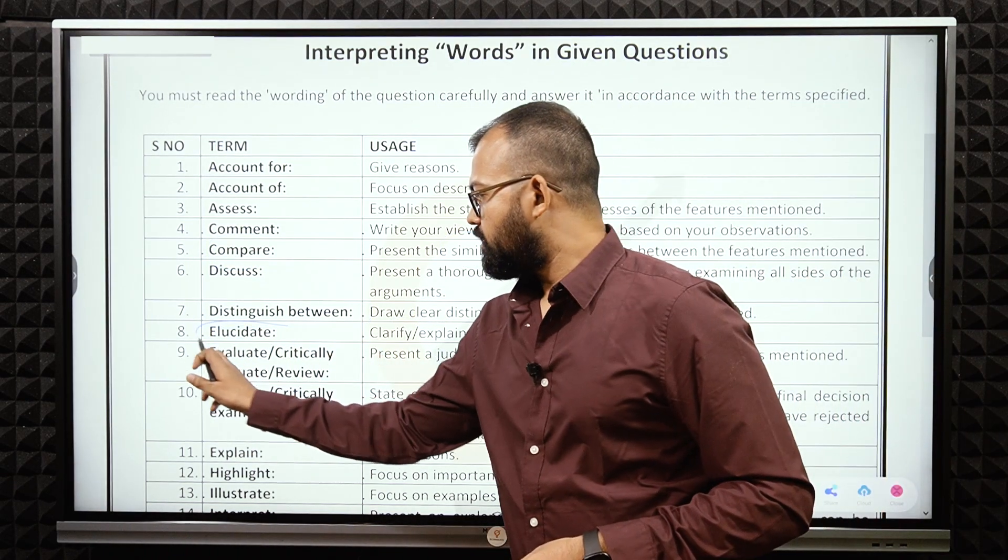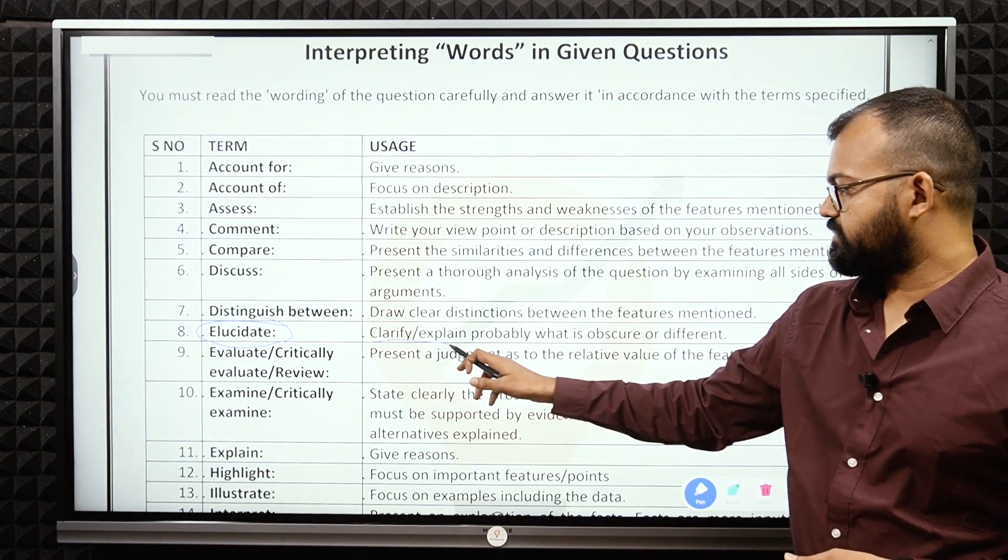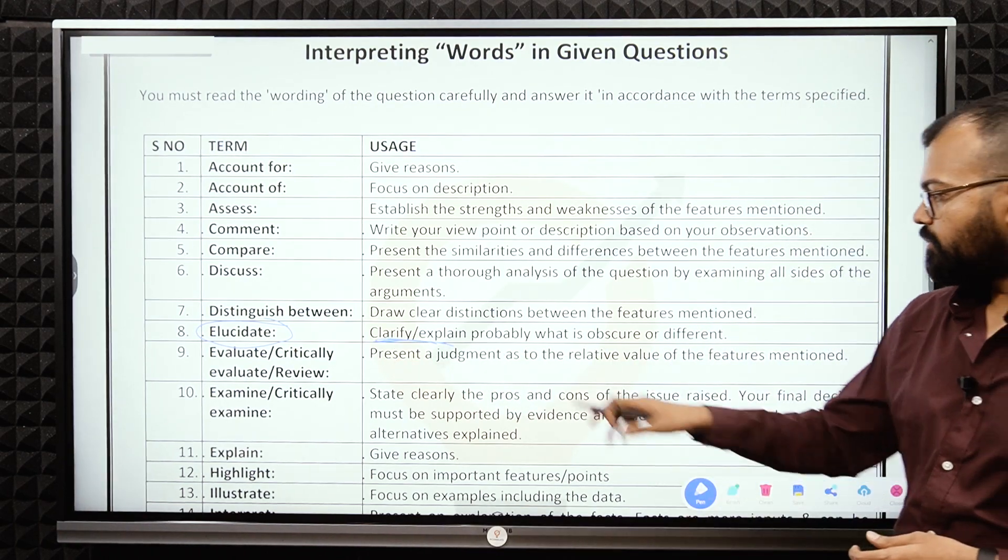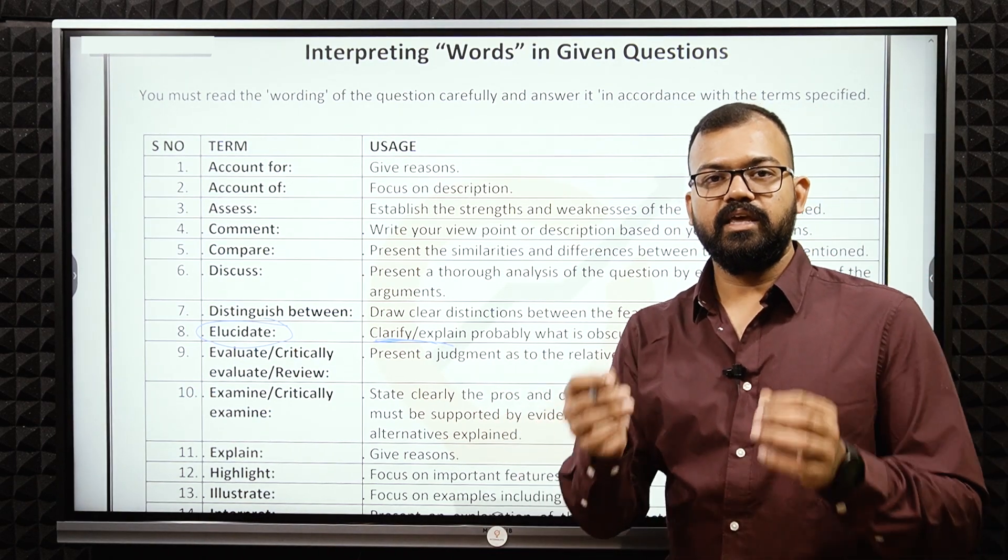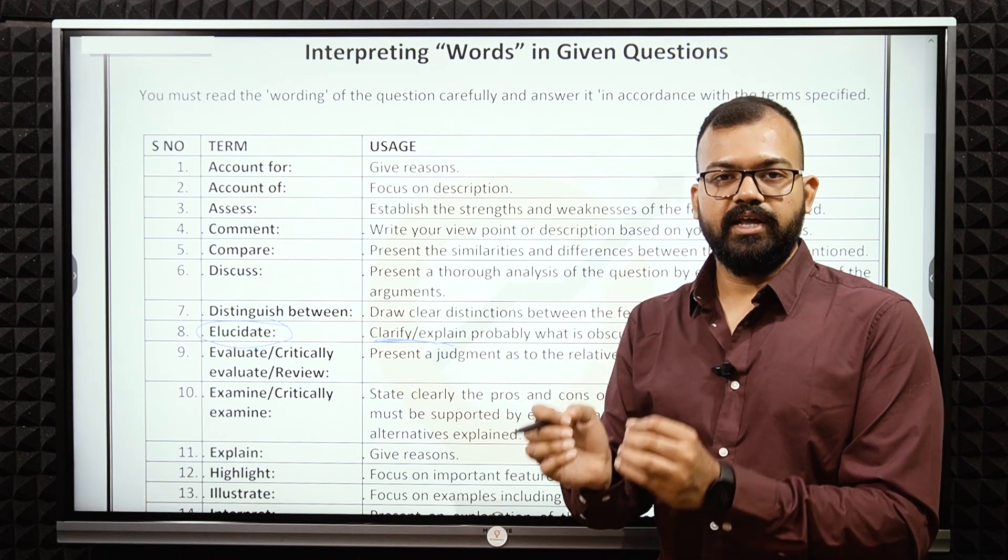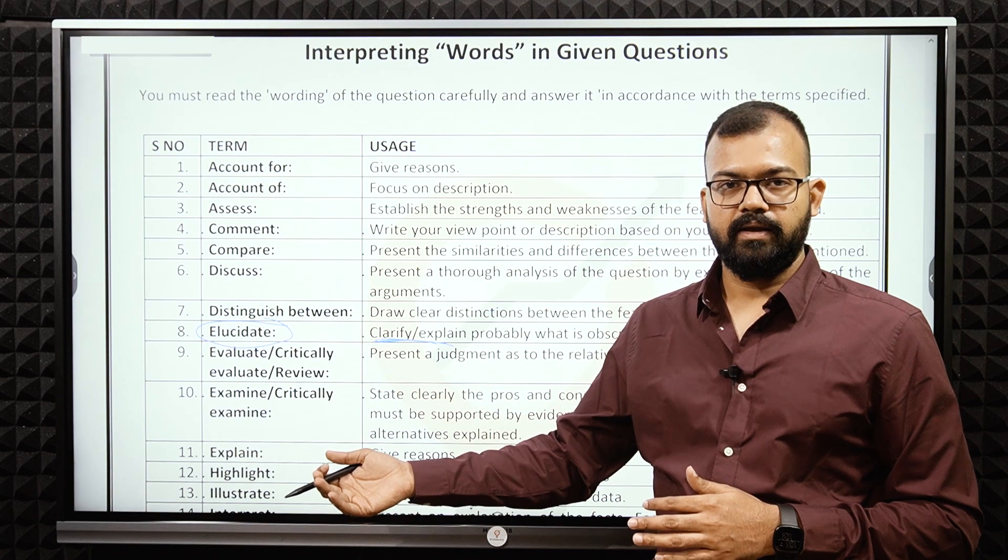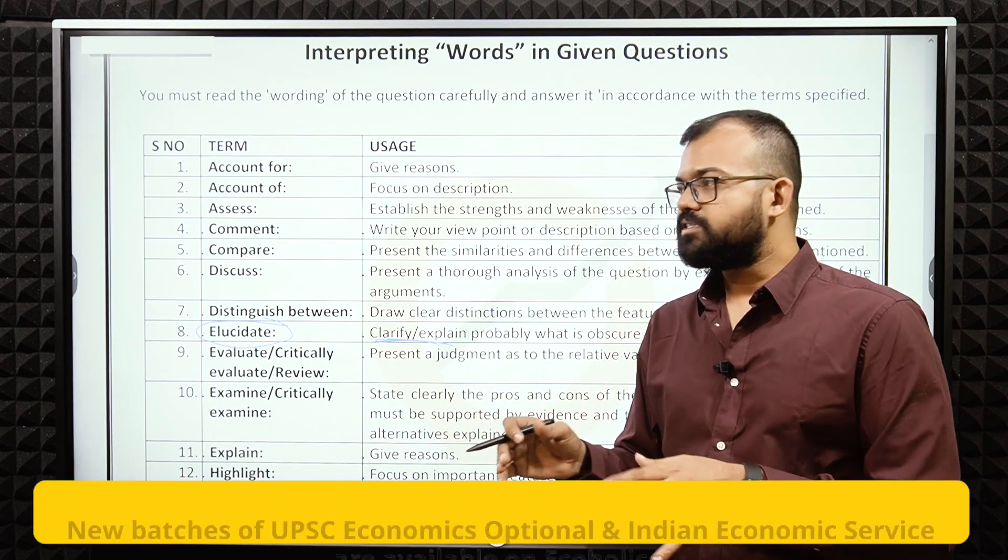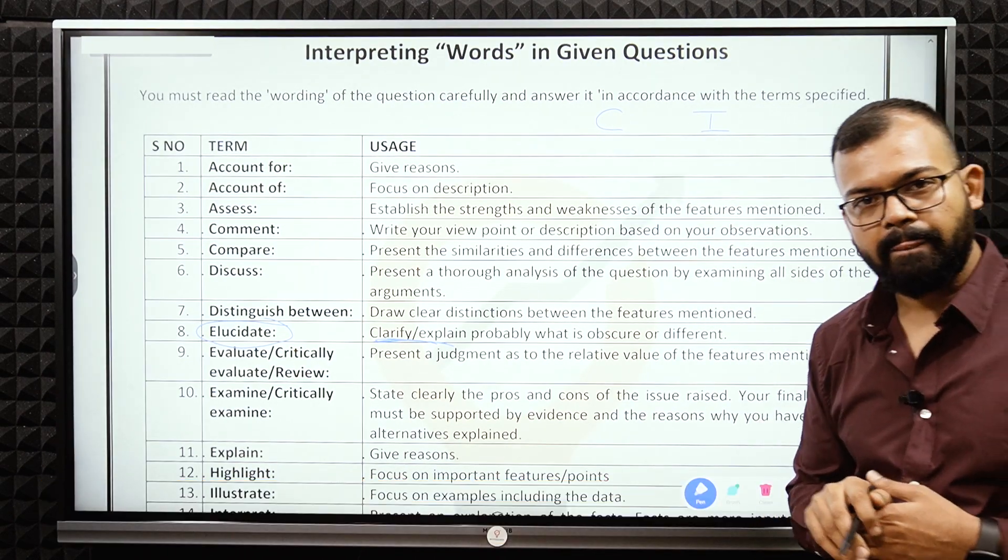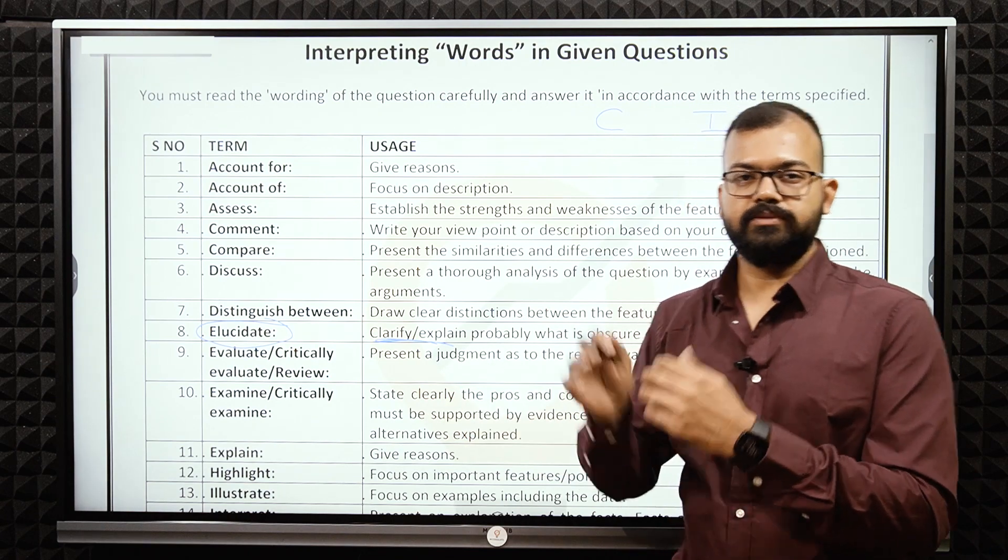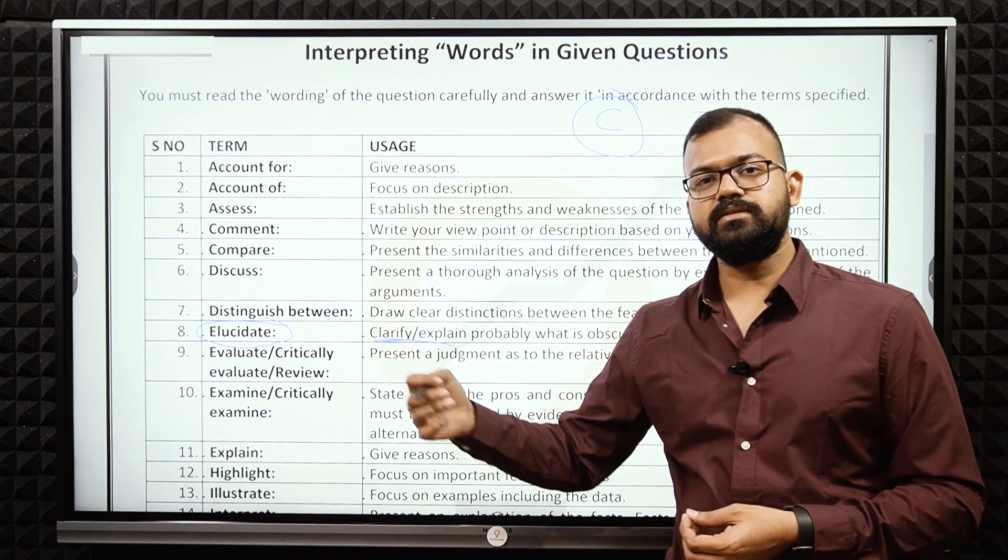Next is elucidate. Under elucidate, we have to clarify or explain probably what is obscure or different. It means if I'm saying elucidate the basic feature of Indian economy, explain the current economic crisis in India. Now what is the best feature? You know that economy is driven by consumption or investment. Generally, it can be both as well. Consumption means people are moving towards consumption. They're consuming. That's why economy is growing.